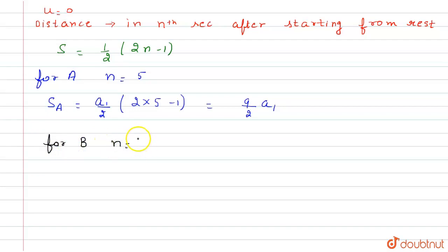equals to 3, so S_B = (a₂/2)(2×3 - 1) = (5/2)a₂. But it is given that S_A = S